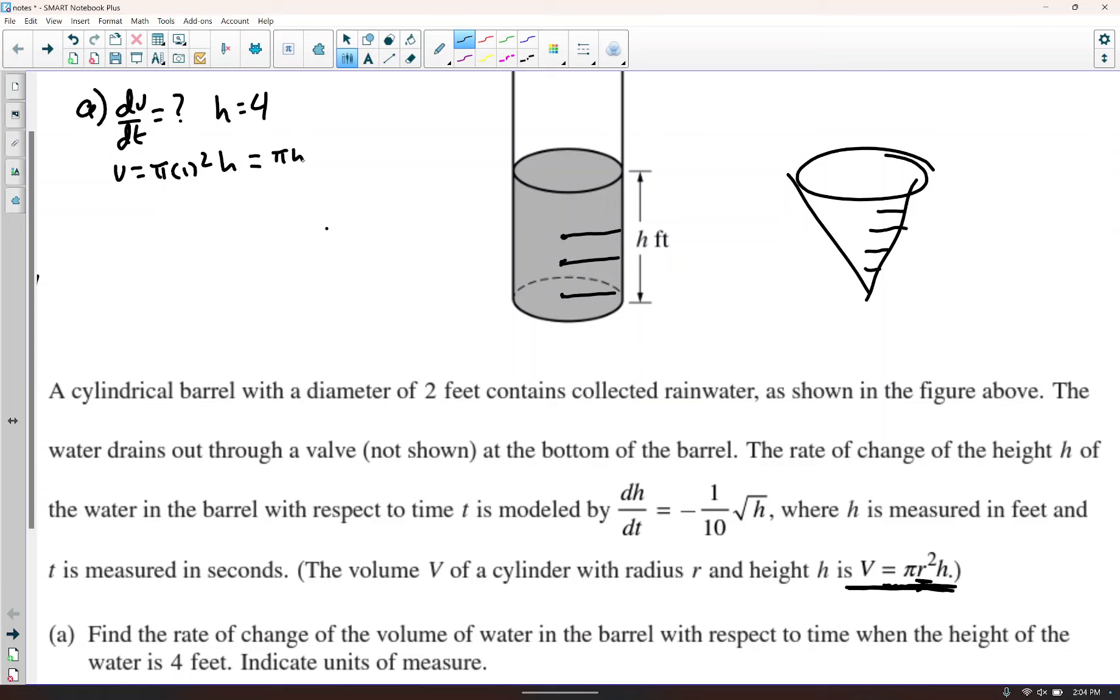So we can write V is equal to pi times 1 squared times h. So the volume is just pi h. So dV/dt is equal to pi dh/dt. We want dV/dt, this is equal to pi times, and then we'll plug 4 in for that h. We want to plug it into here, 4 in for that h right there, because it's dh/dt. So negative 1 tenth times the square root of 4, which is 2 tenths, 1 fifth. So negative pi over 5, and the label would be feet cubed per second.